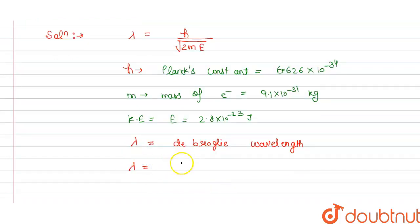So from this we can write here, lambda is equal to H that is equals to 6.626 into 10 power minus 34 and this is divided by under root of 2 and mass of electron 9.1 into 10 power minus 31 and this is kinetic energy 2.8 into 10 power minus 23. So on solving this, this is in under root.